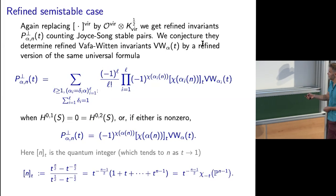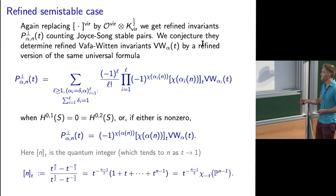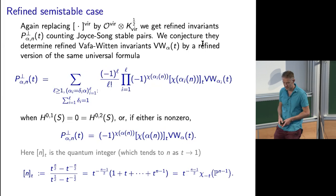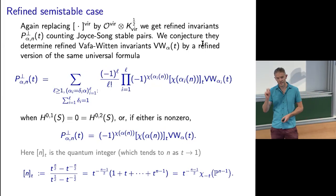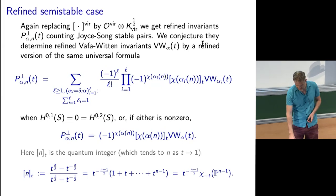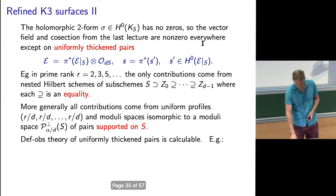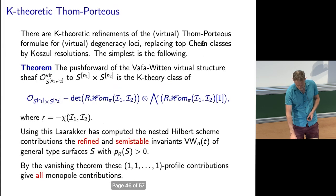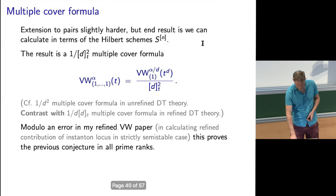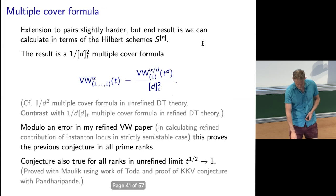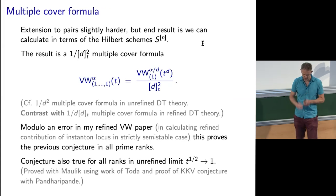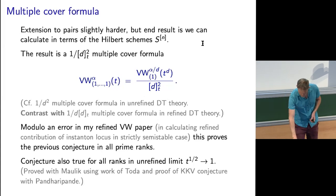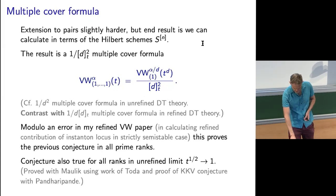The quantum integer is the Poincaré polynomial of projective space — just as integers are Euler characteristics of projective space, quantum integers are Poincaré polynomials of projective space.